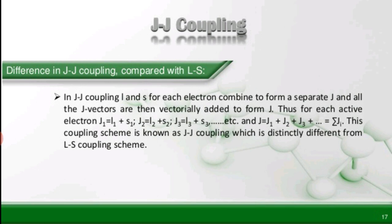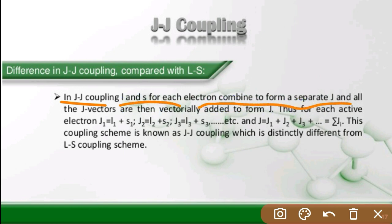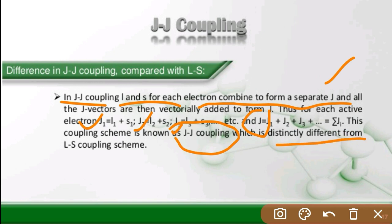Now the difference between JJ coupling and LS coupling. In JJ coupling, L and S for each electron are combined separately to form individual J values: J1 = L1 + S1, J2 = L2 + S2, J3 = L3 + S3. Then the total angular momentum is J = J1 + J2 + J3. This scheme is known as JJ coupling, which is different from LS coupling.